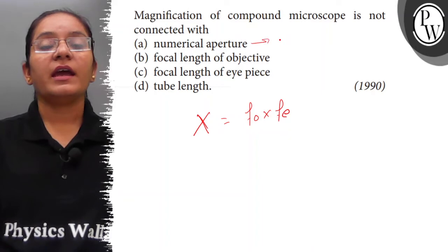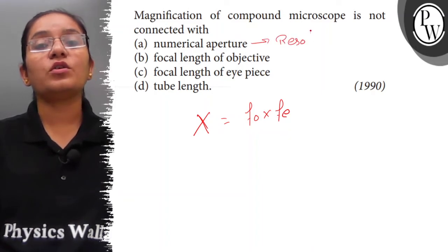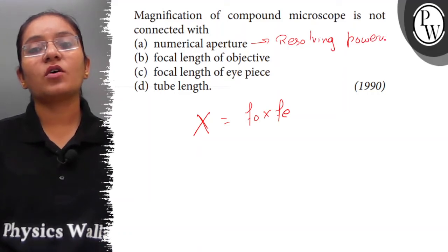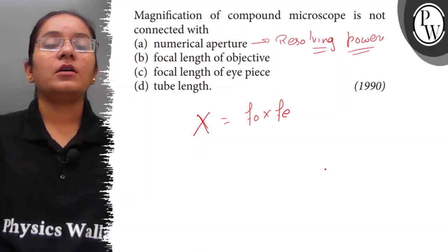While numerical aperture is directly proportional to resolving power, the more the numerical aperture, the more will be the resolving power of the microscope.